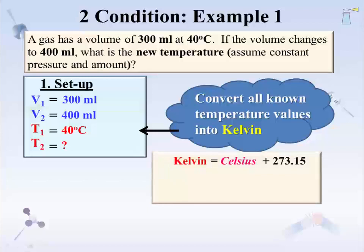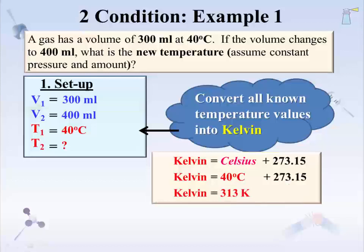The conversion is straightforward: take the temperature in Celsius and add 273.15. Forty degrees plus 273.15 — remembering to line up significant figures when adding, where the ones place in 40 is the digit of last significance — gives T1 of 313 K. We can wait until the end of the problem to round, but this is shown here for demonstration. Now it is time to move to step two.